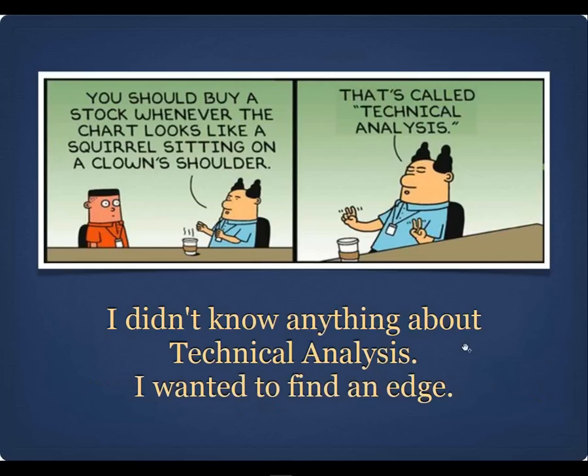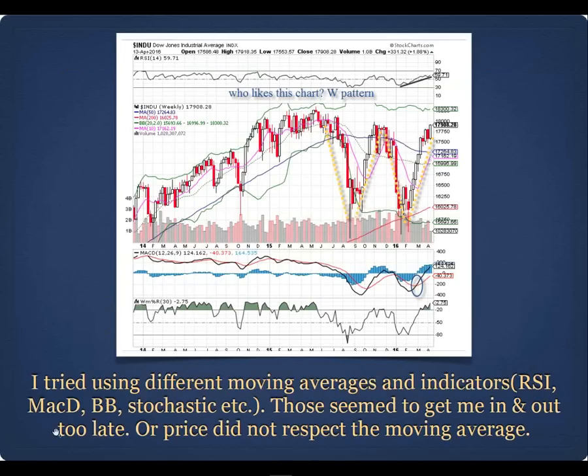I needed to find an edge to determine where to buy and where to sell. After those two market crashes, I decided buying and holding wasn't working — those crashes kept wiping out everything made over the last three to five years. I tried many different indicators: moving averages, RSIs, MACDs, Bollinger Bands, stochastics. They seemed to get me in and out too late, and price didn't respect moving averages very well.